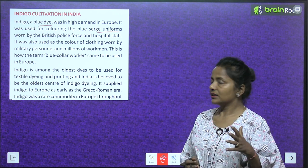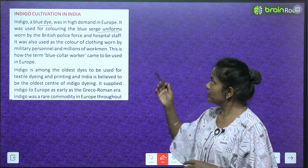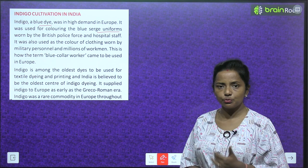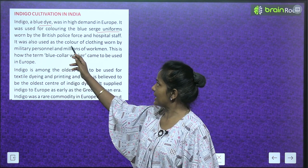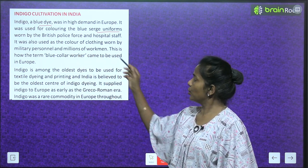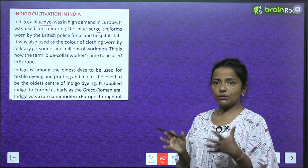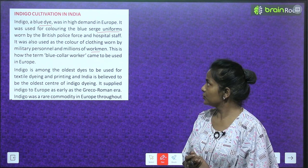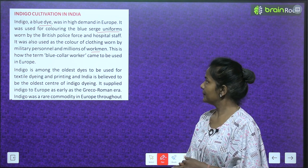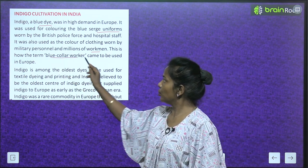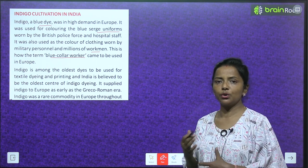Indigo was also used as the color of clothing worn by military personnel and millions of workmen. This is how the term 'blue collar worker' came to be used in Europe. The dye was essential for the large textile and labor workforce that wore blue-colored clothing.